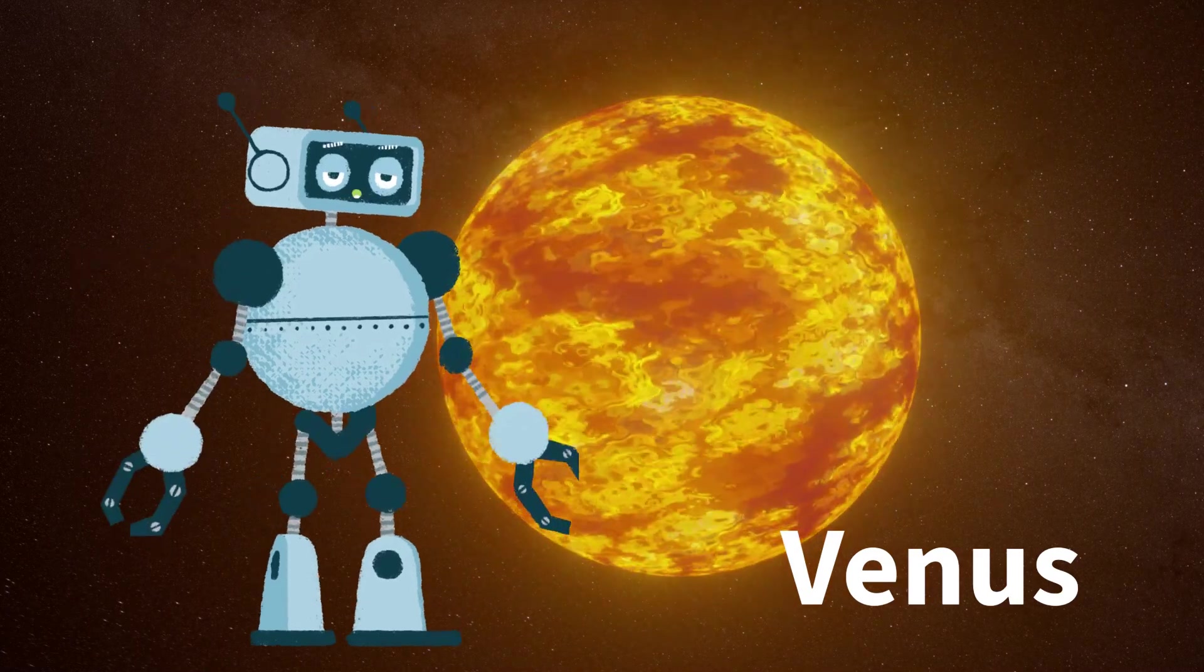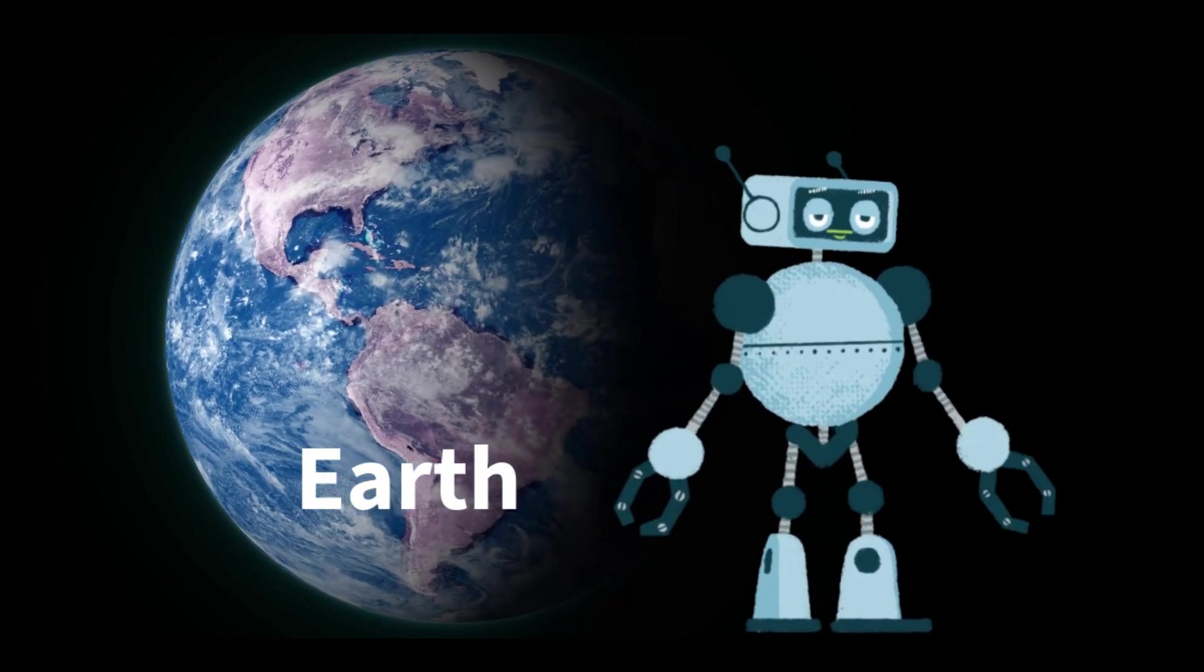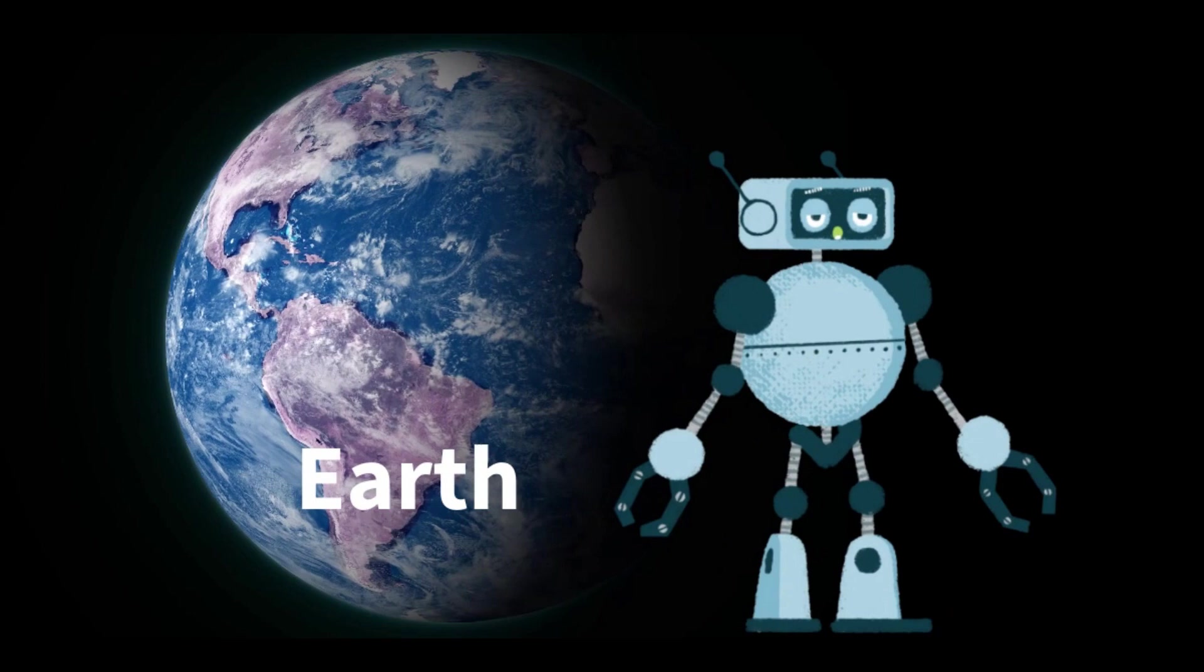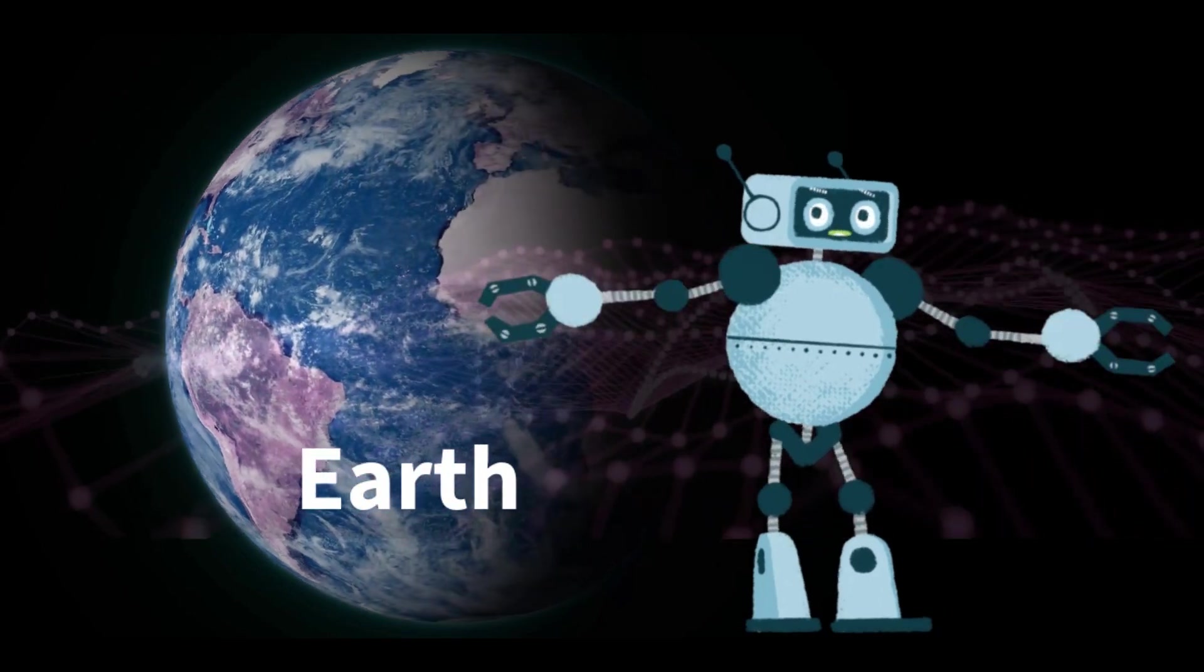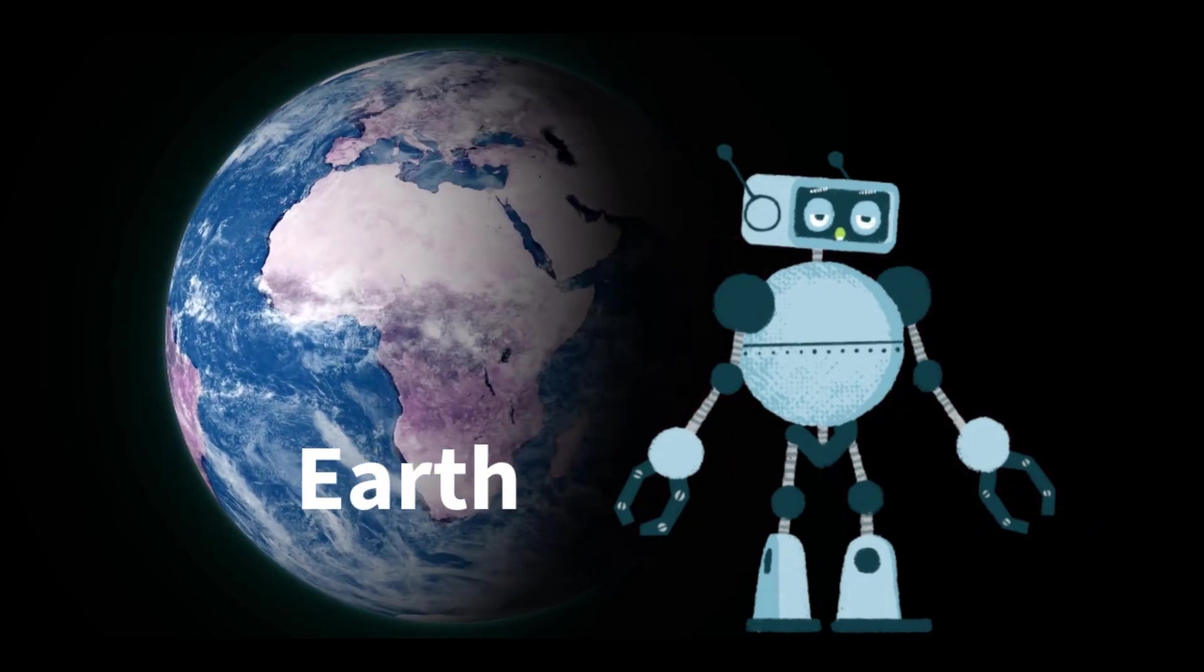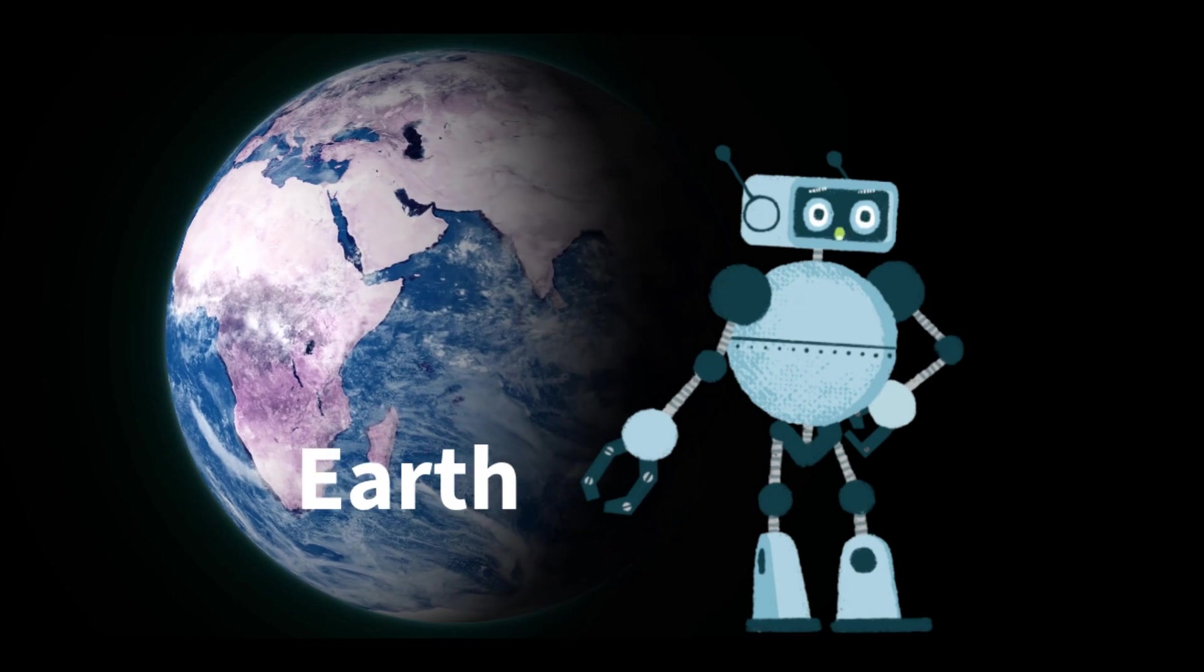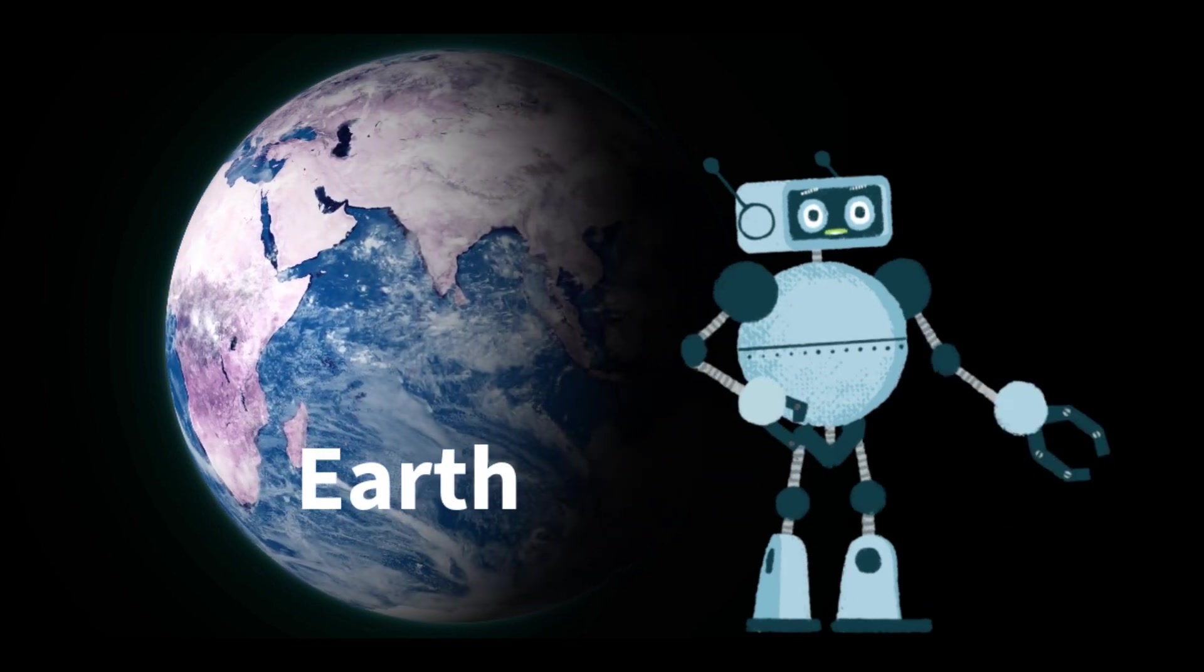Earth, our beautiful blue home, is the third planet from the Sun and the only known planet with life. Roughly 12,742 kilometers (7,918 miles) in diameter, Earth has diverse landscapes including oceans, mountains, forests, and deserts. It supports life with a balanced mix of nitrogen, oxygen, and other gases.